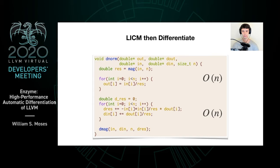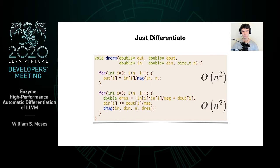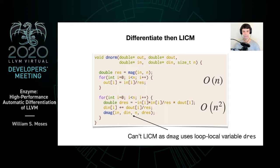If, however, we were to differentiate the function without running the optimization first, we would see that both the forward pass and the reverse pass run in O(n²) time, with the function calls to mag and the differentiable dmag inside of the loop. We could then attempt to run the optimization after the fact, and while this does work for the forward pass, the reverse pass still has the call to dmag inside of the loop as it uses the loop-local variable dres.